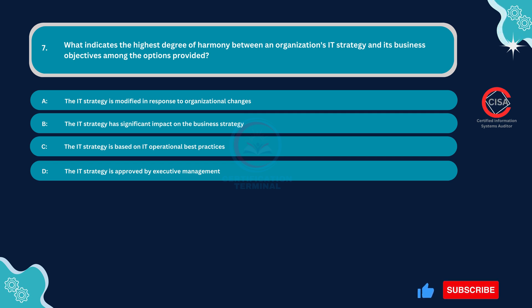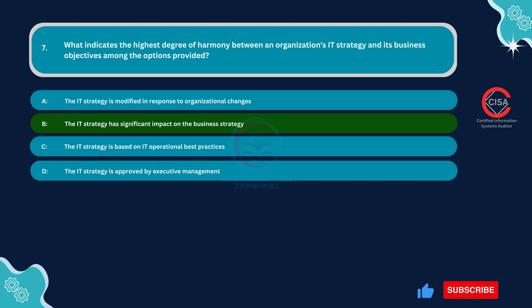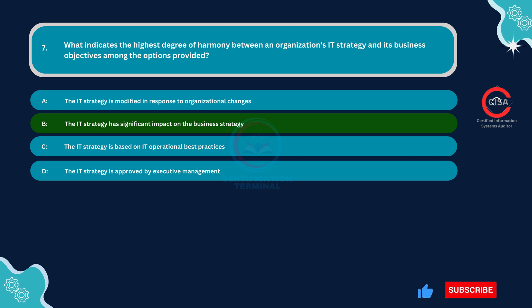The correct answer is Option B — the IT strategy has significant impact on the business strategy. This option indicates a strong alignment between the IT strategy and business objectives. When the IT strategy has a significant impact on the overall business strategy, it demonstrates that IT initiatives and decisions are closely tied to the organization's overarching goals and objectives, ensuring that IT investments and efforts are directed towards supporting and enhancing business outcomes.